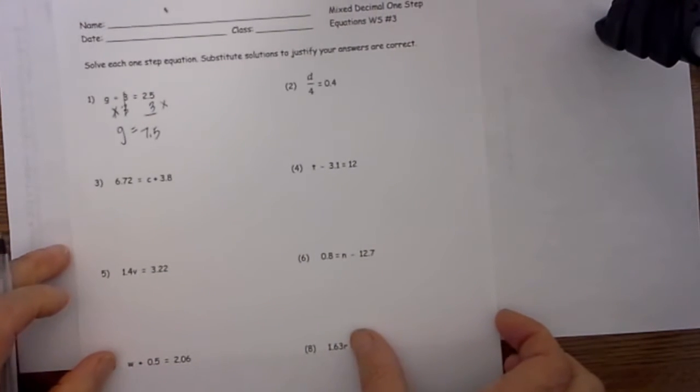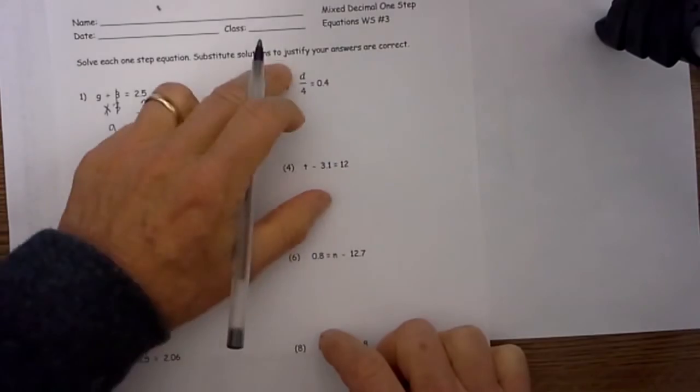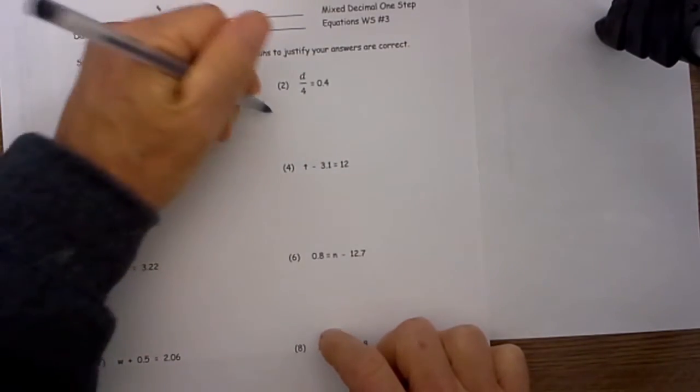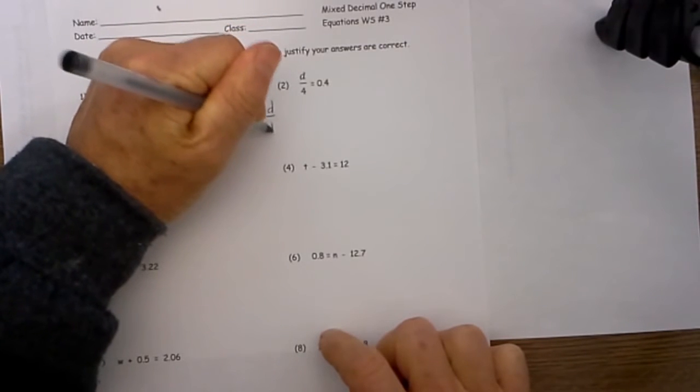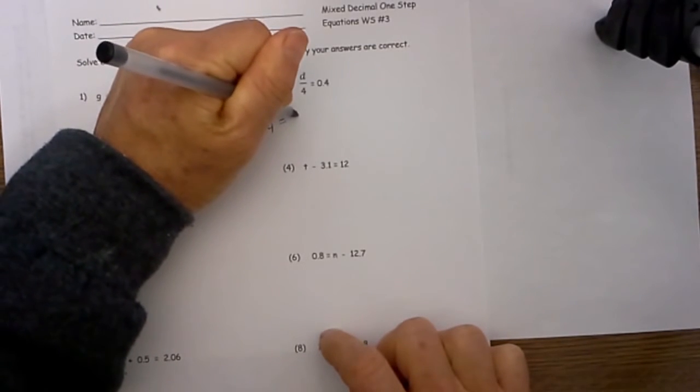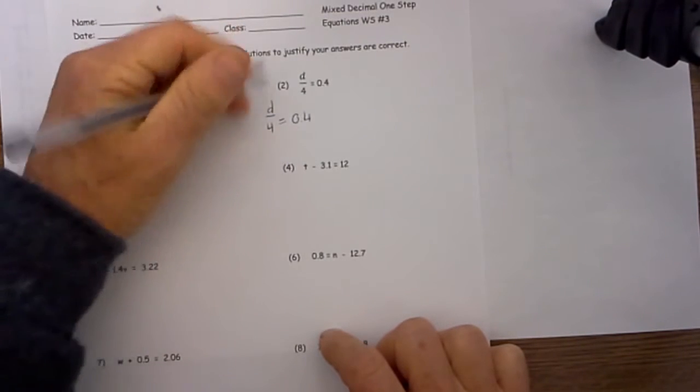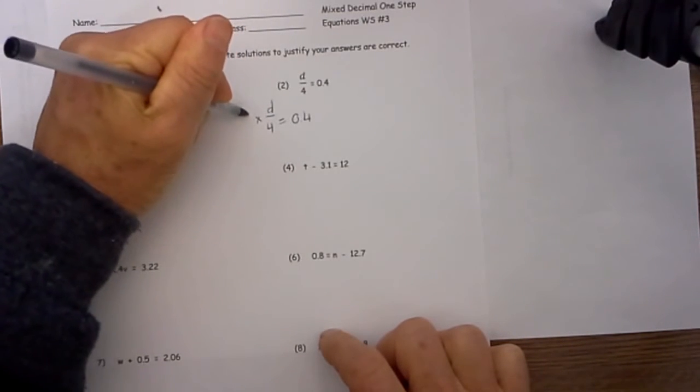Next we have a fraction. Whenever you get a fraction, don't worry. You can think of a fraction as just division. If we have d over 4 equals 0.4, it is division. To get rid of the division we just multiply this by 4.